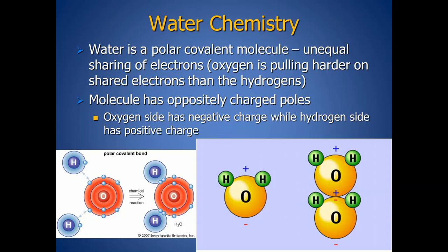A polar covalent bond is a bond in which you have an unequal sharing of electrons. The oxygen is pulling harder on that shared pair of electrons than the hydrogen is, and this creates oppositely charged poles. I like to call it the Mickey Mouse molecule — because the oxygen is pulling harder, it creates a partial negative charge on its side and a partial positive charge on the hydrogen side. When water bonds to itself, opposites attract, and water bonds in this long linear fashion. All of water's unique properties are a direct result of its polar covalent nature.